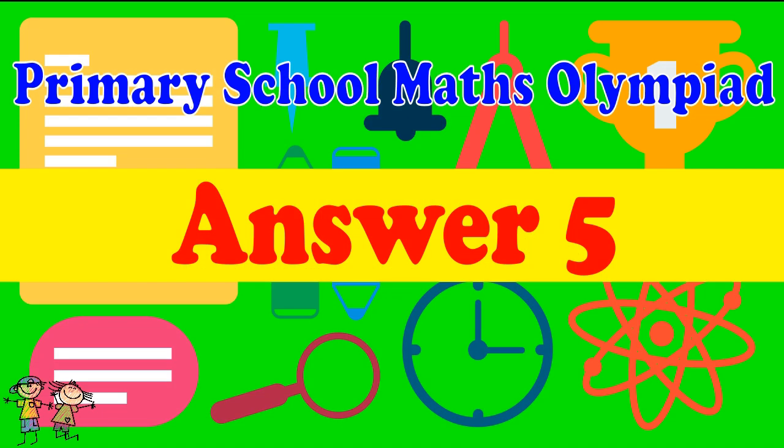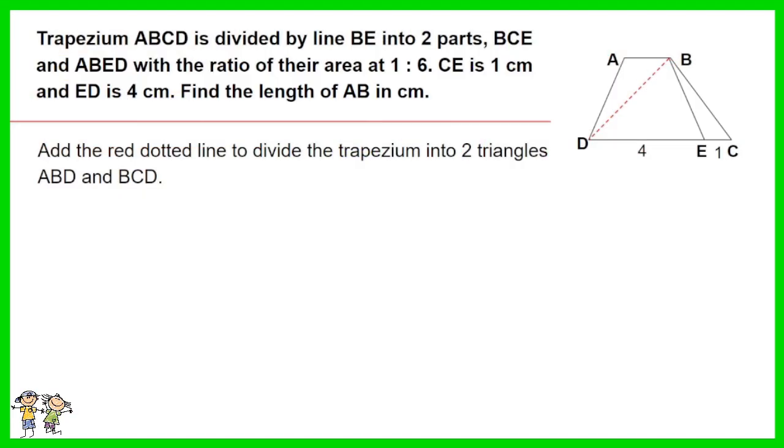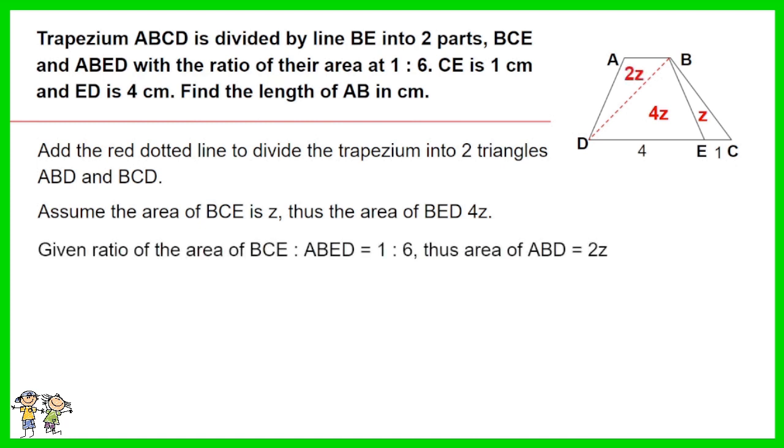Answer for question 5. Add the red dotted line to divide the trapezium into two triangles, ABD and BCD. Assume the area of BCE is Z, thus the area of BED is 4Z. Given ratio of the area of BCE to ABED equals 1 to 6, thus area of ABD equals 2Z. Area of triangle BCD equals 5Z, area of triangle ABD equals 2Z. Since both have the same height, thus AB equals 2 cm.